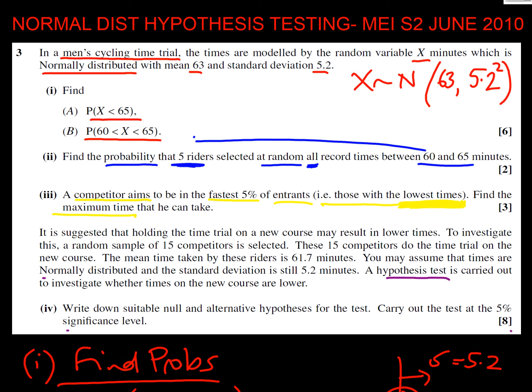Let's read the question. It is suggested that holding the time trial on a new course may result in lower times. To investigate this, a random sample of 15 competitors are selected. These 15 do the time trial on the new course. The mean time taken for these riders is 61.7 minutes. You may assume that the times are normally distributed, and the standard deviation is still 5.2. Carry out a hypothesis test to investigate whether the times on the new courses are lower.